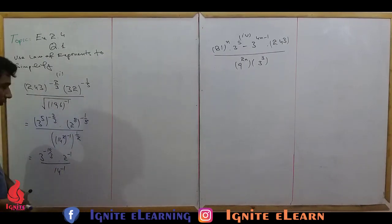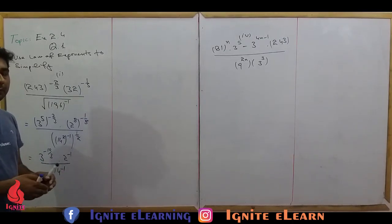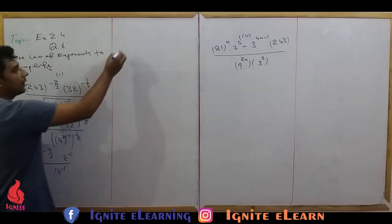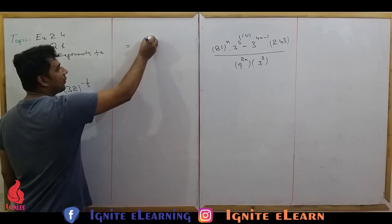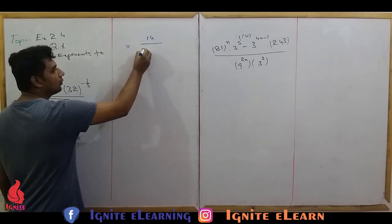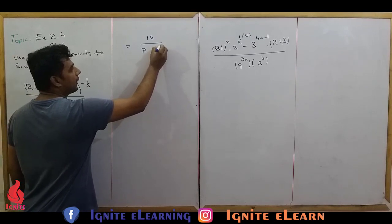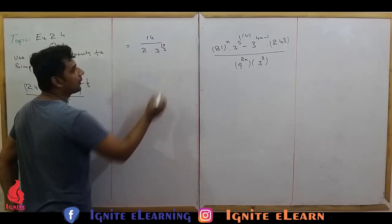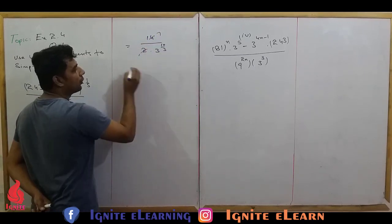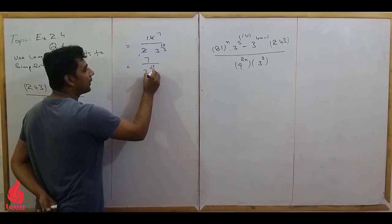Now we simplify further. Using the 7th property of exponents — a negative power means we take the reciprocal, making the power positive. So 14 raise to power minus 1 becomes 1 over 14. Also, 2 raise to power minus 1 becomes 2 raise to power plus 1, and 3 raise to power 10 over 3 remains. Multiplying: 2 times 7 gives 14, so we get 7 over 3 raise to power 10 over 3.